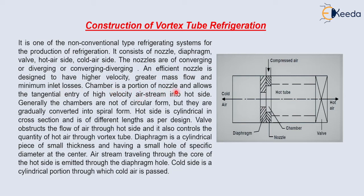The chamber is a portion of the nozzle and allows the tangential entry of high velocity air stream into the hot side. The compressed air enters from this side into the chamber of nozzles. The chambers are not of circular form but are gradually converted into a spiral form. The hot side is cylindrical in cross section and is of different length as per design.